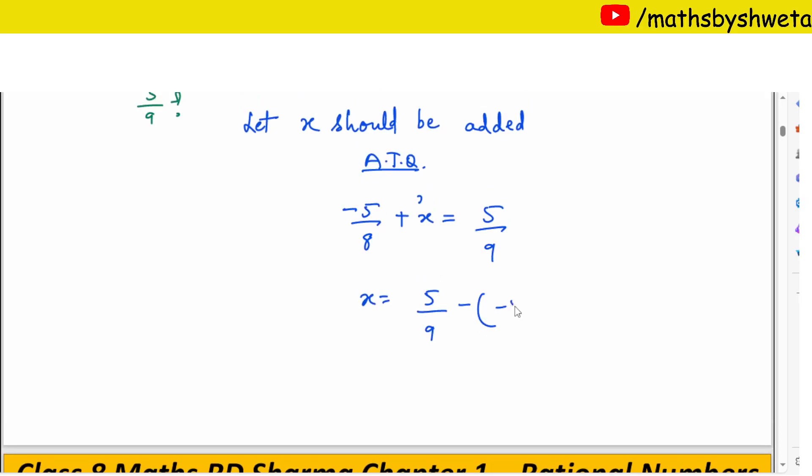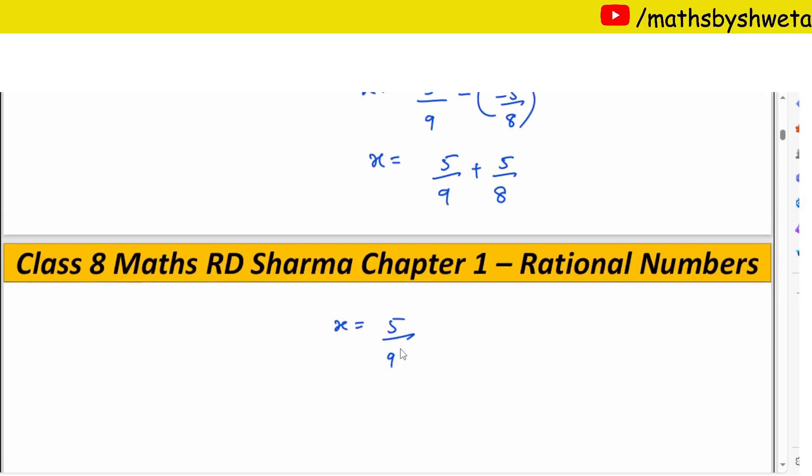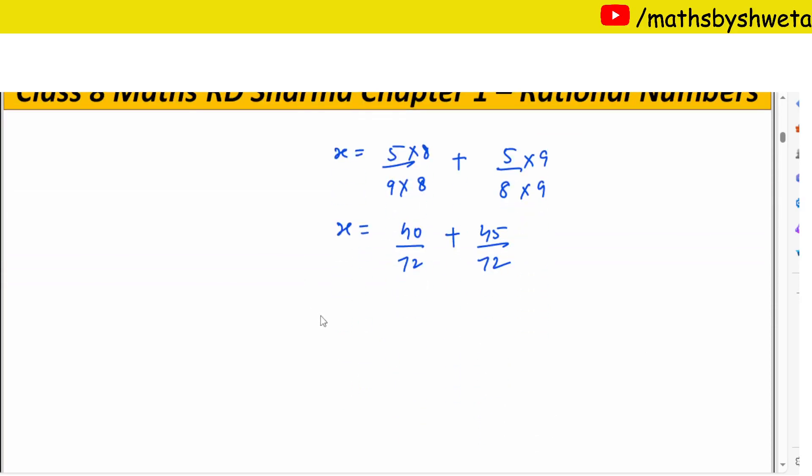This means I have to get x's value. So this will be here minus. X is 5 upon 9 plus 5 upon 8.